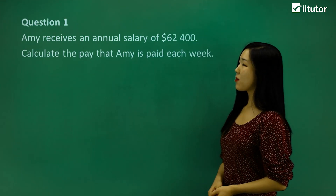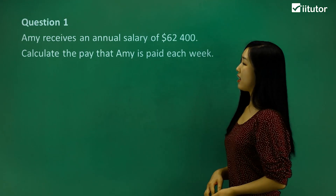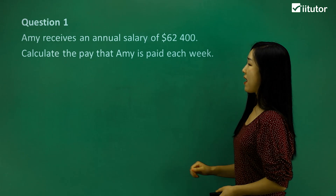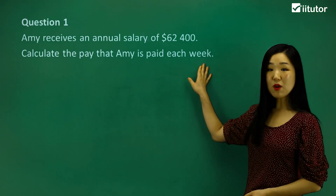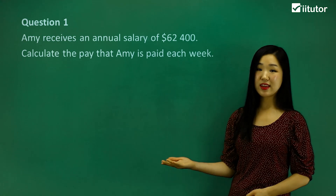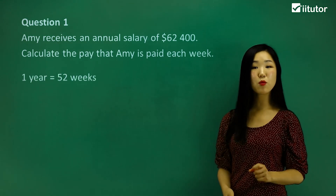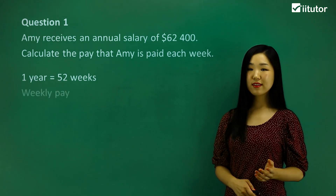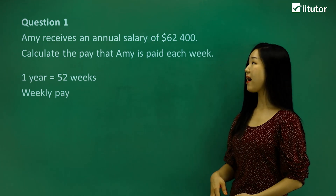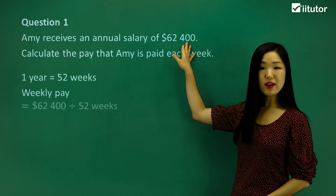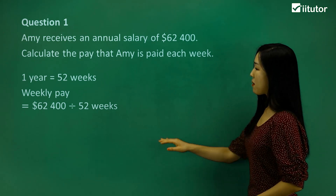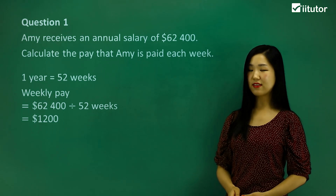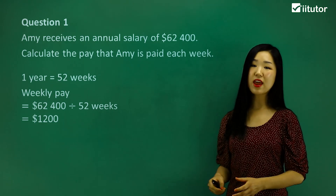Starting with question one: Amy receives an annual salary of $62,400. We want to calculate the pay that Amy is paid each week. The key word here is 'week.' In one year there are 52 weeks, so to calculate Amy's weekly pay we simply divide her yearly salary by 52. That gives us $1,200 — the amount Amy receives per week.